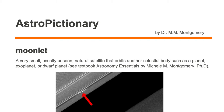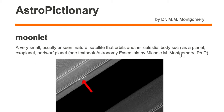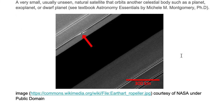A moonlet is a very small, usually unseen, natural satellite that orbits another celestial body such as a planet, exoplanet, or dwarf planet. Let's take a look at an example of a moonlet.